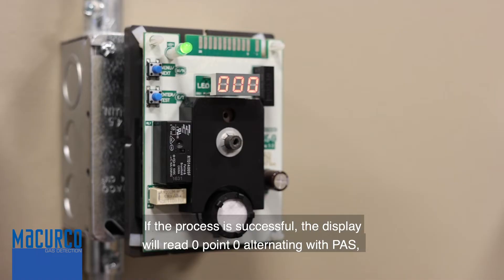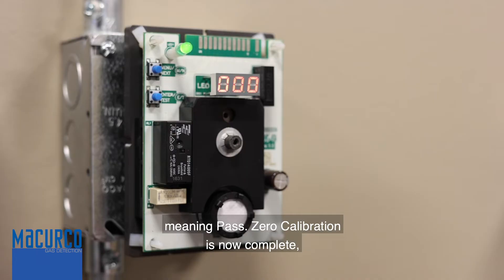If the process is successful, the display will read 0.0 alternating with pa, meaning pass. Zero calibration is now complete and you are ready to proceed with span gas calibration.